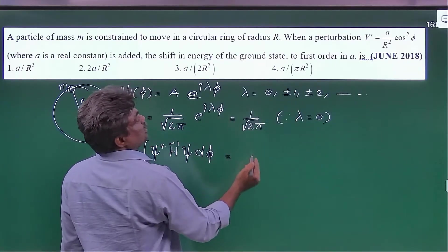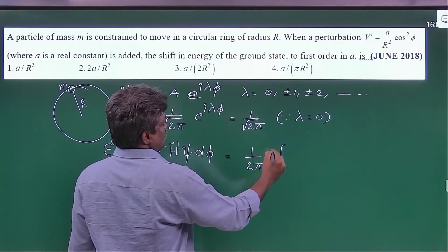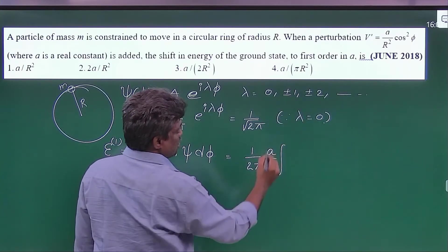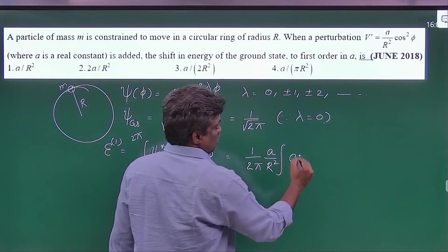So if you substitute all these things, 1 over 2 pi is outside, and small a pi capital R square is also outside, and this is cos square phi d phi.